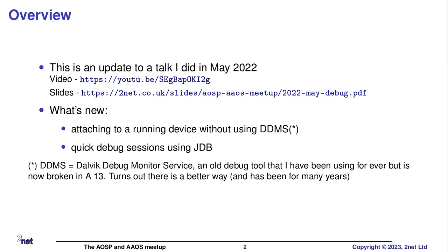How to do debugging without using DDMS. Why did I use DDMS? I guess the answer is because that's the way I've always done it since the Android 1.5 days — DDMS's little debug tool just kind of worked. But gradually over the years it worked less and less well, and finally on Android 13 it stopped working altogether, or at least I couldn't get it to work. Somebody explained to me that the way I was doing it was a terrible way in the first place.